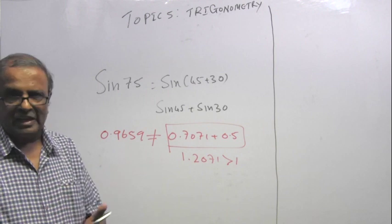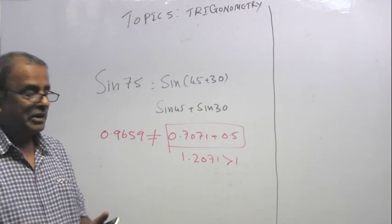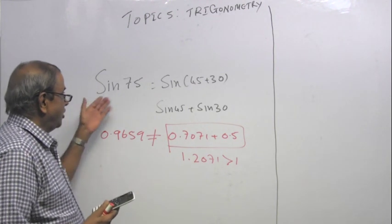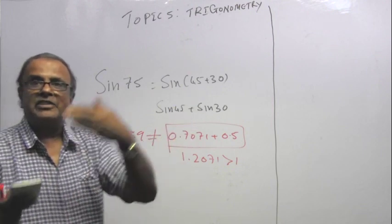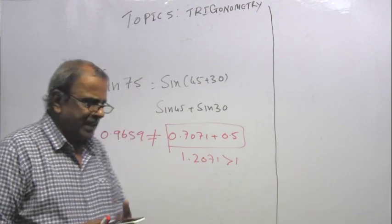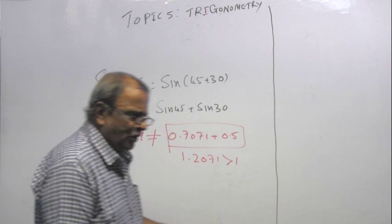0.9659. Sin 45 is 0.7071 plus 0.5. First and foremost, these two are not equal. Assuming you did not bother finding sin 75, when you add these two you get 1.2071 which is greater than 1.